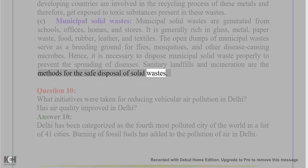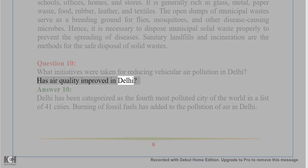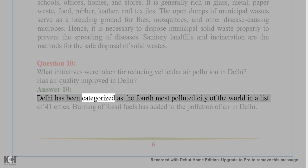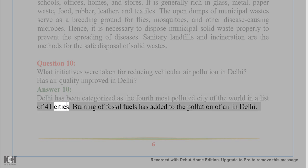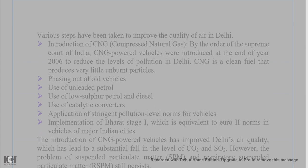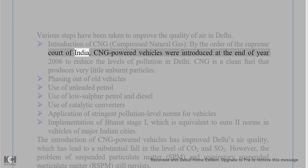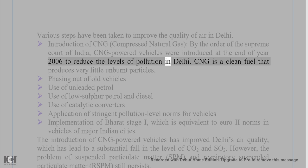Question 10: What initiatives were taken for reducing vehicular air pollution in Delhi? Has air quality improved in Delhi? Answer: Delhi has been categorized as the fourth most polluted city in the world among a list of 41 cities. Burning of fossil fuels has added to air pollution in Delhi. Various steps have been taken, including the introduction of CNG (compressed natural gas) by order of the Supreme Court of India. CNG-powered vehicles were introduced at the end of 2006 to reduce pollution levels in Delhi.